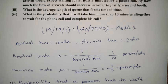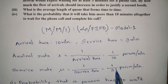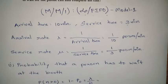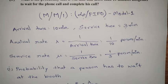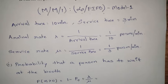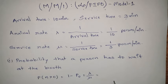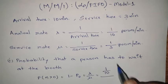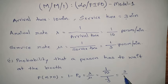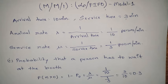For the first question — the probability that a person arriving at the booth will have to wait — we use P(n > 0) = 1 − P₀ = lambda/mu. Substituting: (1/10) / (1/3) = 3/10 = 0.3. So there is a 0.3 probability that an arriving person will have to wait.